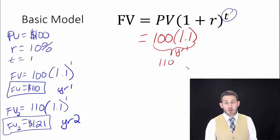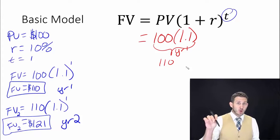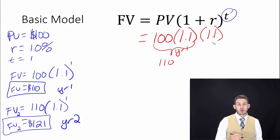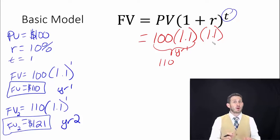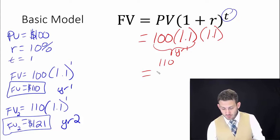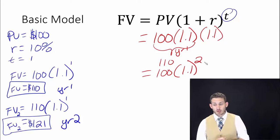Remember that we took that 110 and we multiplied it by the 1 plus r, by that 1.1 as well. So we can just multiply this by the 1.1 there. Now a simpler way to set that up so you don't have to write the 100 multiplied by 1.1 multiplied by 1.1 again is that we can just simplify that and it's going to be the 100 multiplied by 1.1 squared, just like we see in that top equation there.